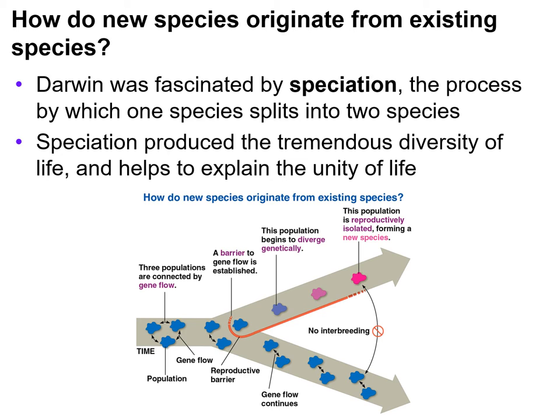Species will diverge. If we look at this picture, we see that we have some kind of barrier that restricts this species from diverging, from evolving, from changing. When that organism changes, we call it a genetic divergence. So this population begins to diverge genetically; therefore it looks different from the original. That's what we're going to be talking about — divergence.